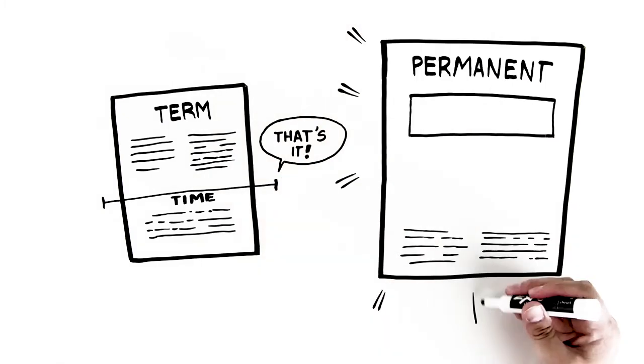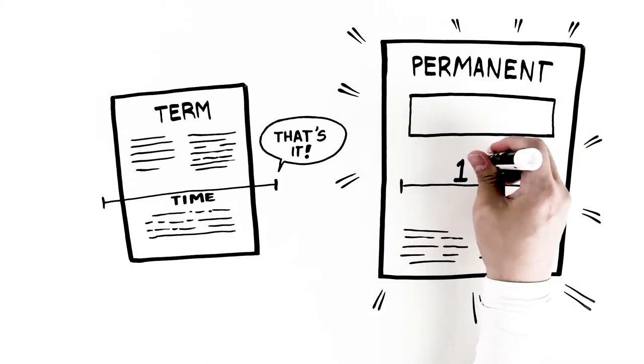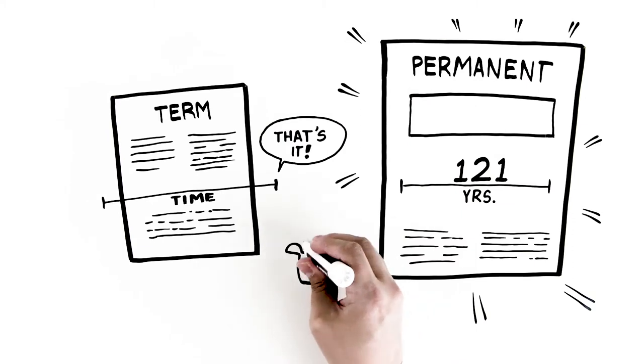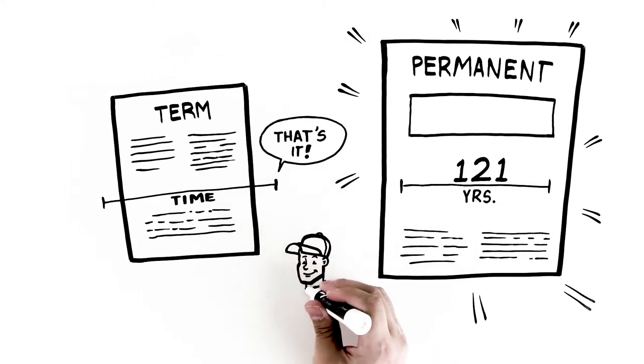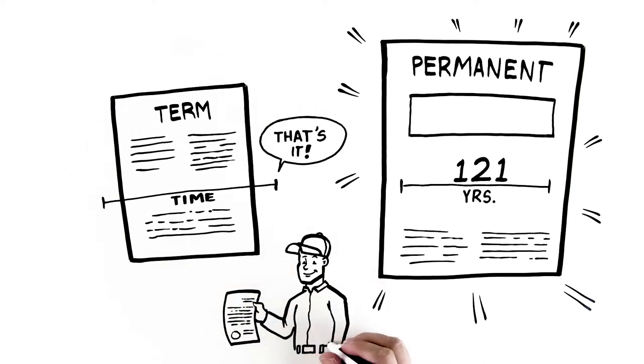A permanent policy is different. A permanent policy also provides a death benefit, but up to age 121 years old. With permanent insurance, a portion of the premiums you pay creates cash value that can be used while you're alive. Over time, this cash value grows with each premium payment, earns interest, and dividends.